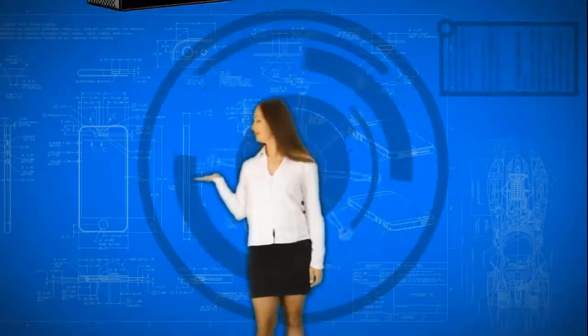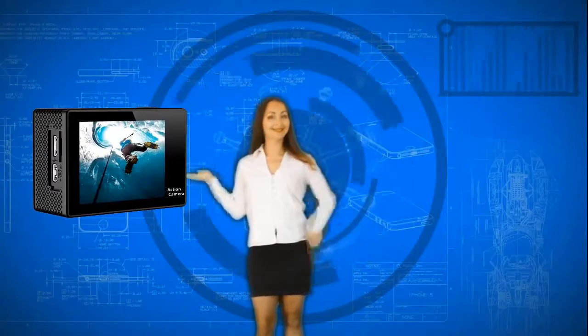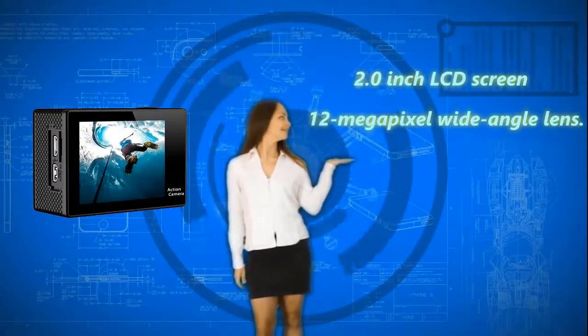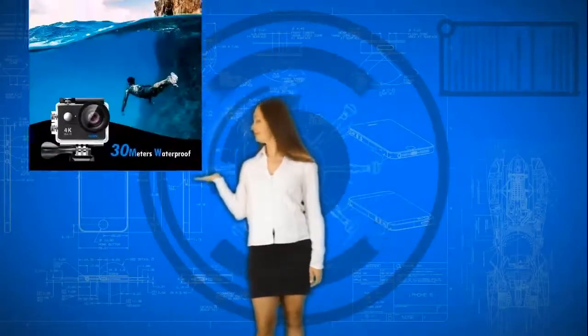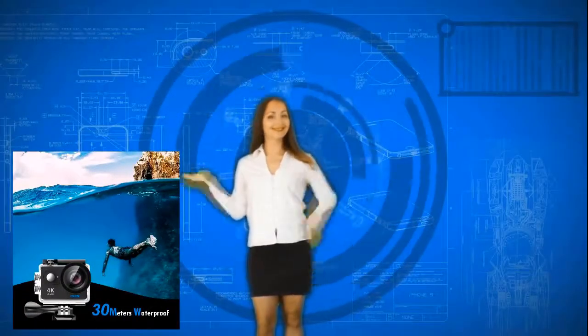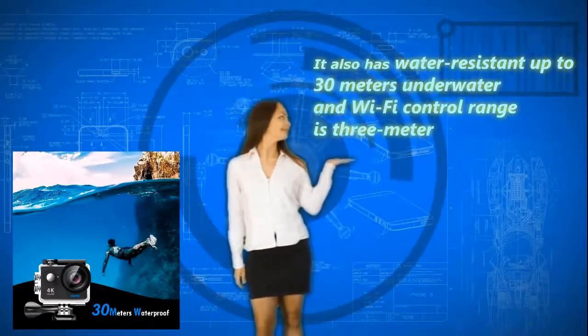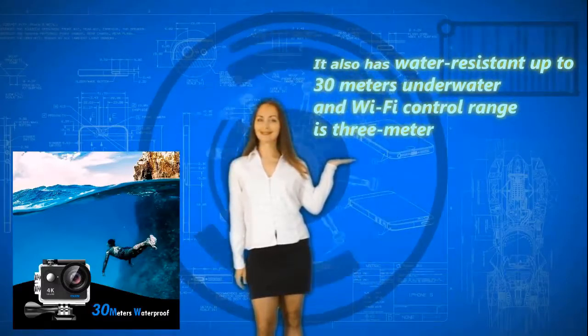Now we're showing some great features of this camera. It has a 2-inch LCD screen and 12-megapixel wide-angle lens. It also has water resistance up to 30 meters underwater, and Wi-Fi control range is 3 meters.